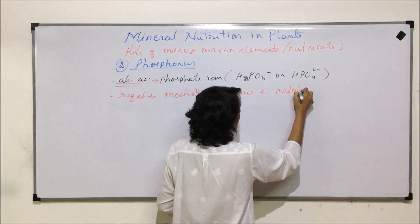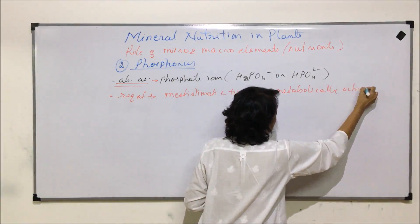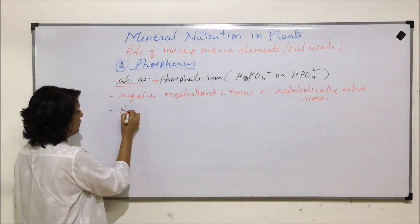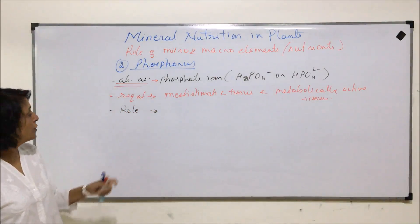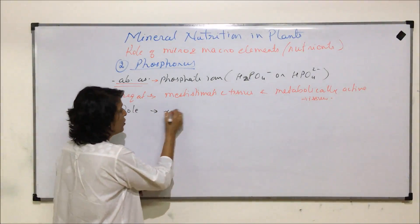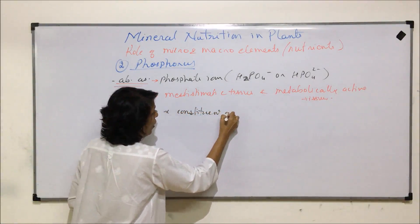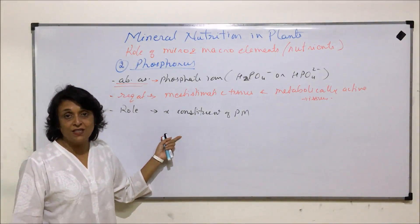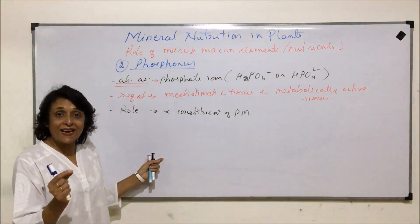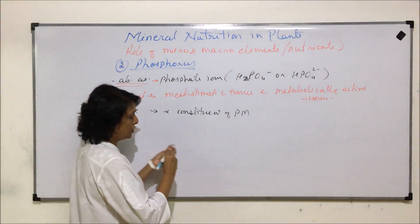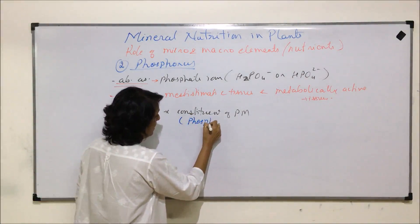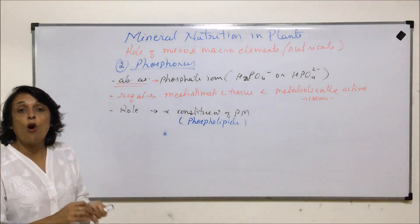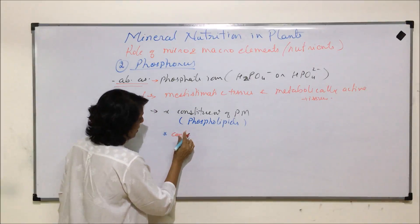Now let us talk about the important roles or functions performed by phosphorus. Phosphorus is a constituent of the plasma membrane. The plasma membrane is made up of proteins and phospholipids, and phosphorus binds to the lipid part forming phospholipids. So phosphorus is specifically a constituent of plasma membrane phospholipids.